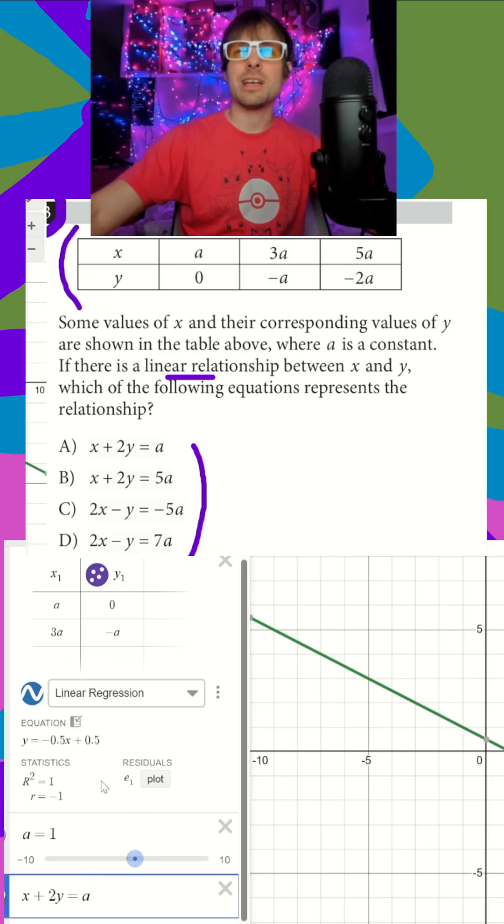Worst case scenario, you have to type in a couple equations, like if D is our answer. But again, you're just looking to type these in until one of your lines matches your table. It's going to be A here.